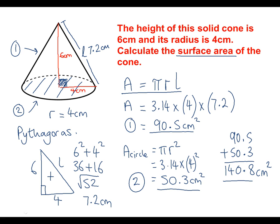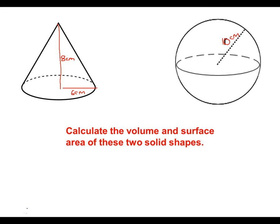So the total surface area of the cone is 140.8 centimetres squared. This question was a little bit more tricky because we had to find L. Sometimes they will give that to you straight away, so you won't need to find it. I've got a couple of questions for you to have a go at now. As always, if you need help, ask your teacher. Good luck.